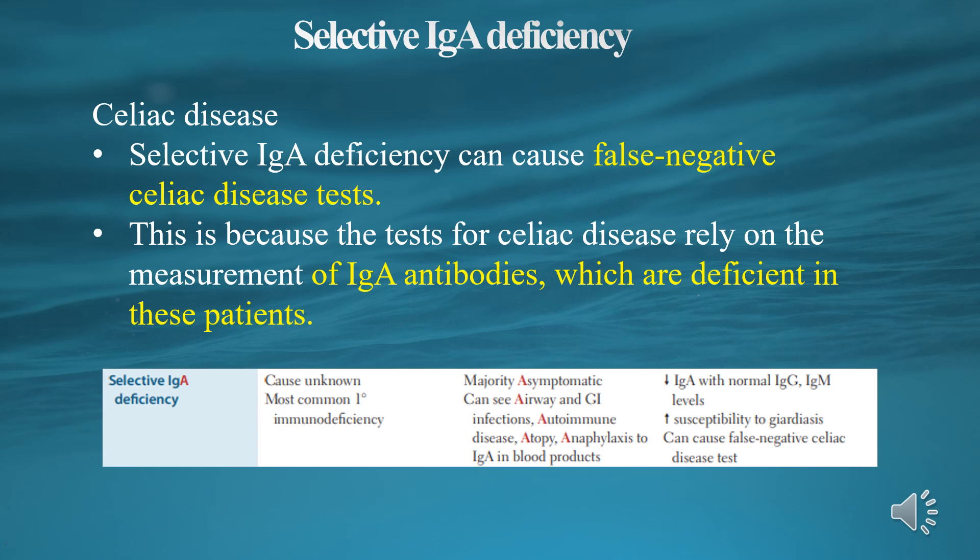Selective IGA deficiency can cause false negative celiac disease tests. This is because the tests for celiac disease rely on the measurement of IGA antibodies, which are deficient in these patients.